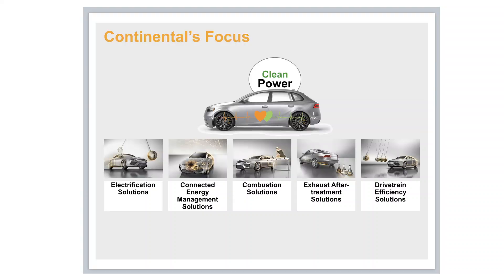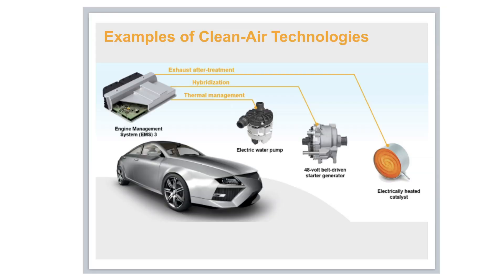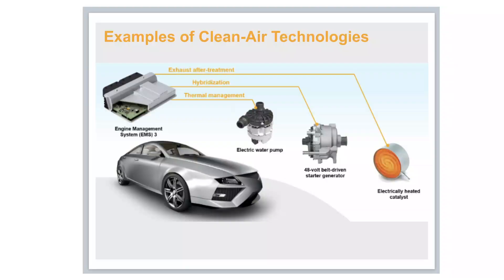At Continental, we continue to focus on clean power solutions, which includes electrification solutions, connected energy systems, combustion solutions, exhaust after-treatment solutions, and drivetrain efficiency solutions. Examples of technologies we're bringing to India for clean air include: an electrically heated catalyst — since maximum emissions happen during the initial start phase, preheating the catalyst reduces early-stage emissions significantly. The second is the 48-volt belt-driven starter generator for situations where you don't need the IC engine. And the third is the electrical water pump for cooling, which allows better control of thermal management.